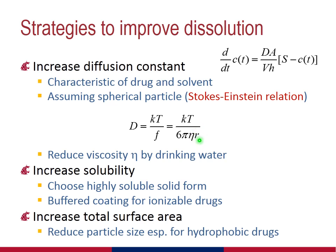The frictional constant can be further broken down into even more fundamental quantities. In particular, it depends on eta, the viscosity of the medium, and r, the size of the molecule. The quantity amenable to modification is the viscosity eta. From a drug administration point of view, the viscosity can be readily reduced by simply drinking lots of water when you take the dosage form. In other words, if you thin out the basing medium by decreasing the viscosity, this will lead to an increase in diffusion constant, which will in turn increase the rate of appearance of dissolved drug in the bulk fluid.